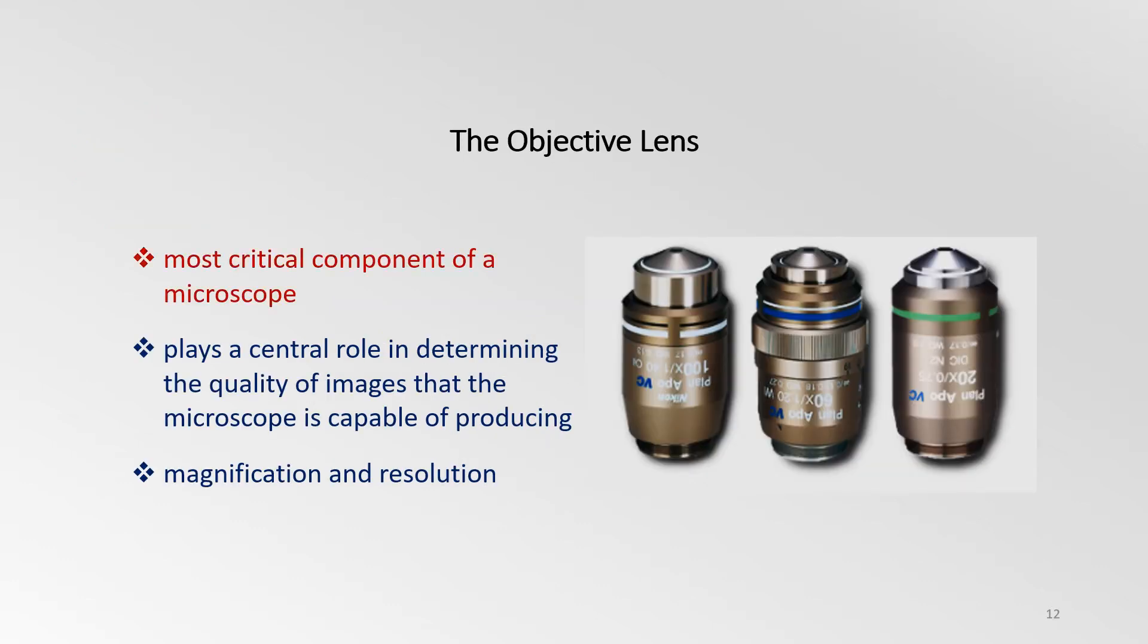Microscope objectives are perhaps the most important components of an optical microscope, because they are responsible for primary image formation, and they play a central role in determining the quality of images that the microscope is capable of producing. Objectives are instrumental in determining the magnification of a particular specimen, and the resolution under which the specimen detail can be observed under the microscope.